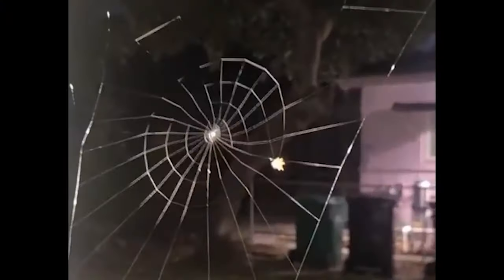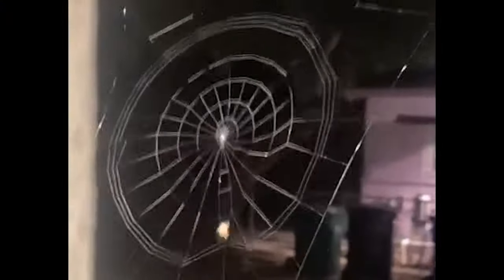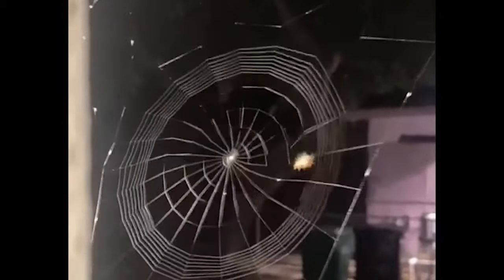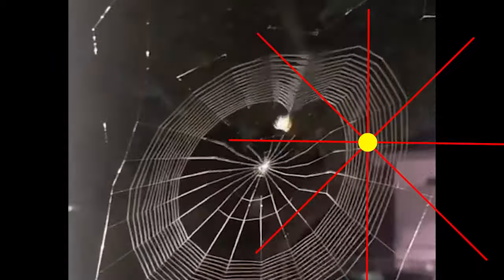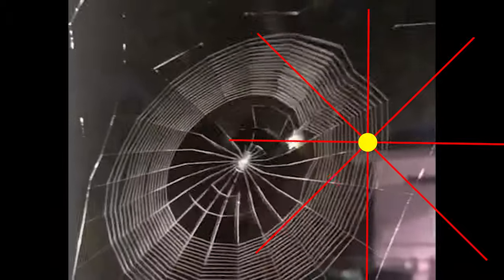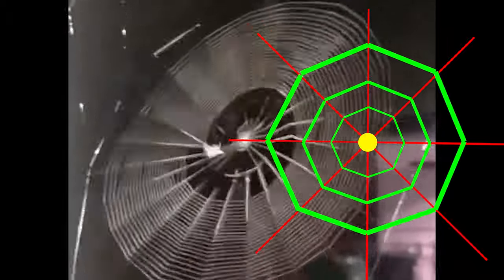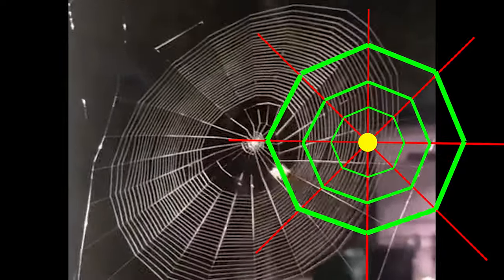I thought it could be cool if I showed you a time-lapse of a spider building its trap. As you can see, it's a bunch of lines converging to a common point, and then a lot of circles are placed around that point with the radius increasing with each circle.